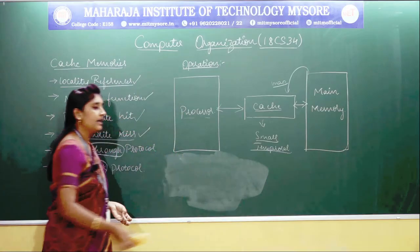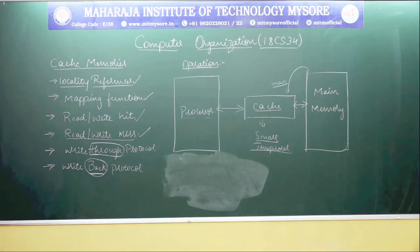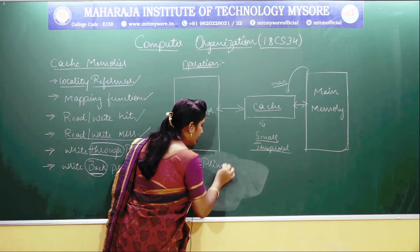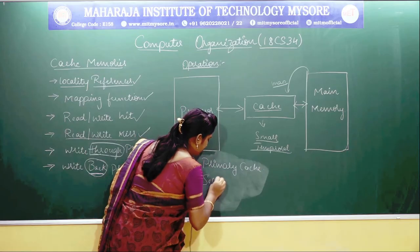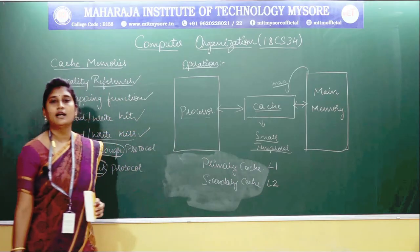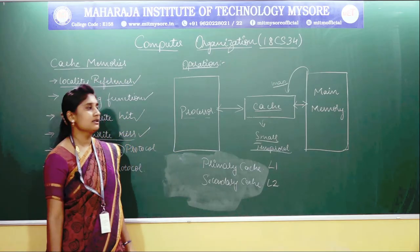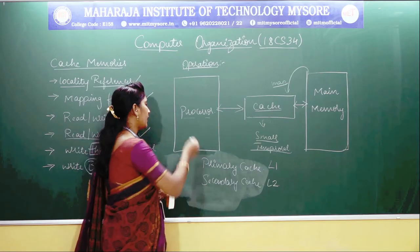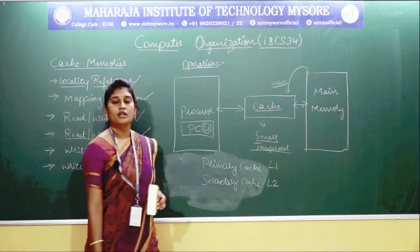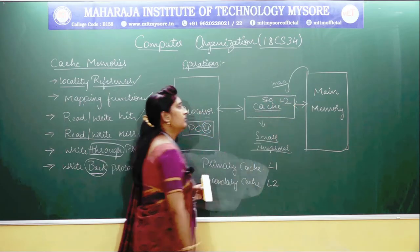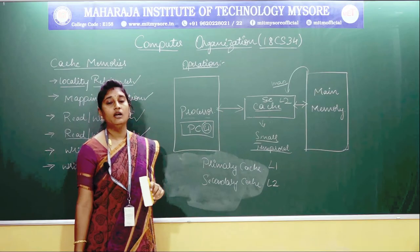Next, you will also have certain variations in your cache memories. In a previous class, you might have discussed that the cache has two variations — that is, your primary cache and your secondary cache, which you will be calling level one and level two cache. The cache memory is divided into two types: primary cache and secondary cache. The primary cache is present between the processor and the main memory.